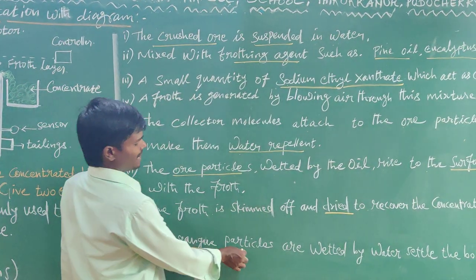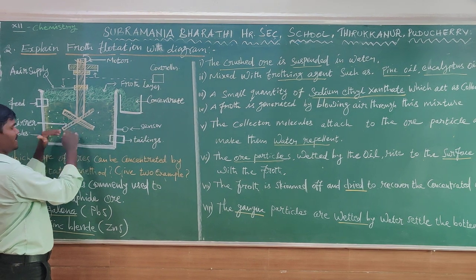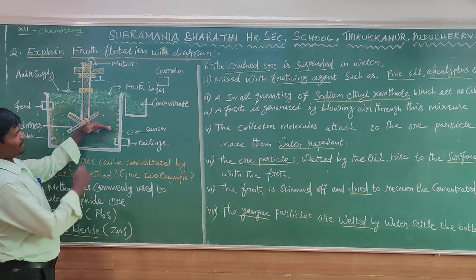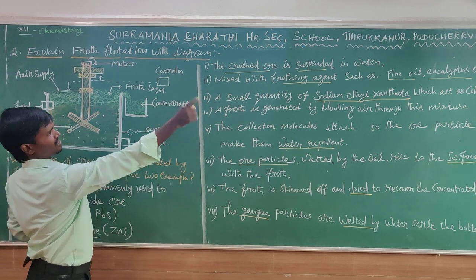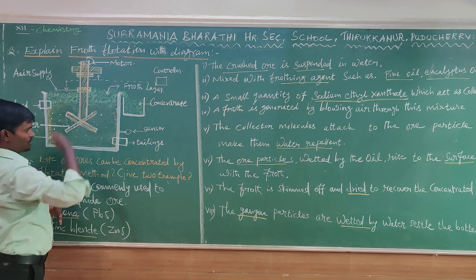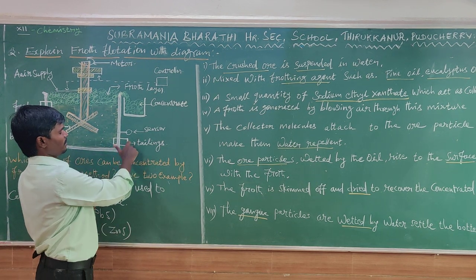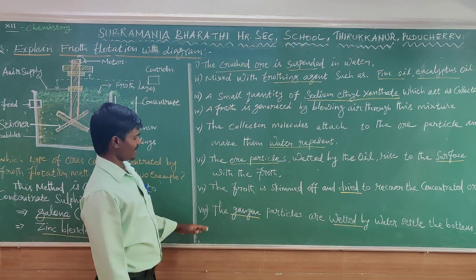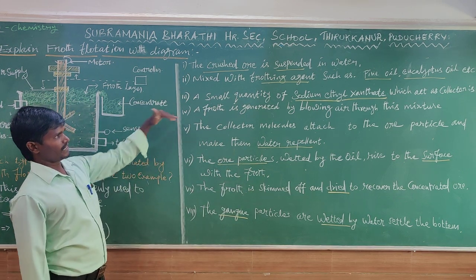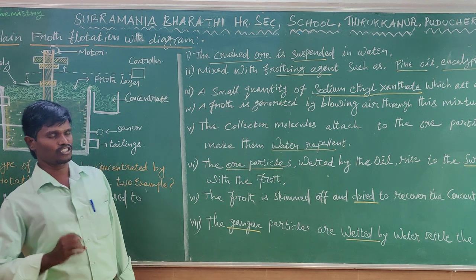The gangue particles are wetted by water. The metal particles are separated using sodium ethyl xanthate. The gangue particles settle at the bottom as the tailing. The flotation process — we will do notes and explain also simple examples.